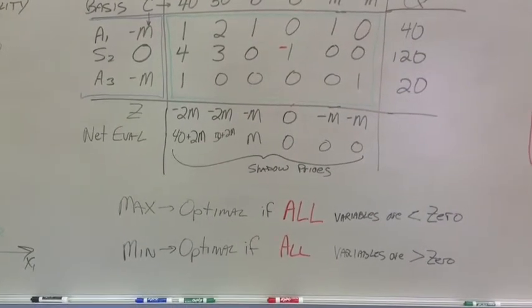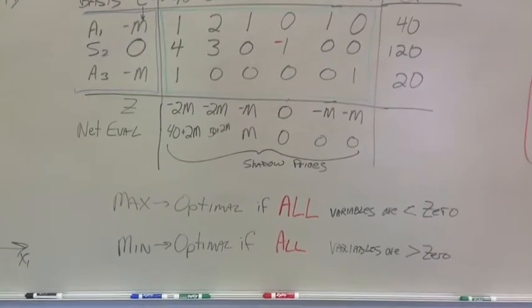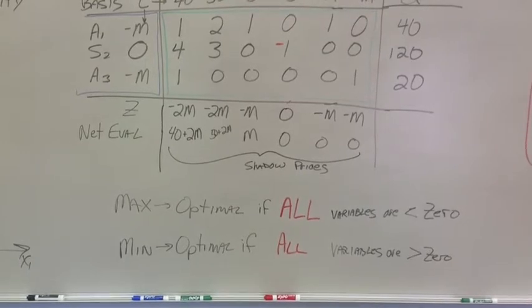It's the opposite if we're trying to minimize cost. It's optimal if all the variables are greater than zero.